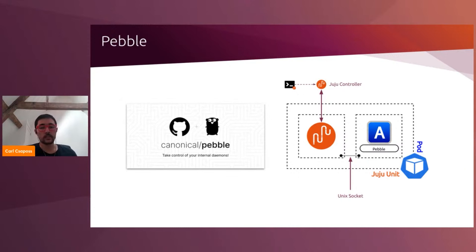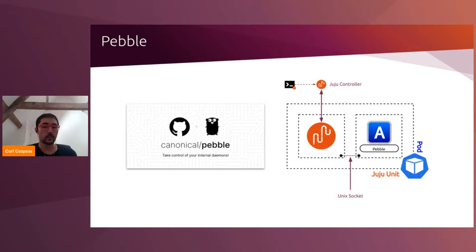So how does the charm container and the workload container communicate? Juju uses something called Pebble, which is a lightweight service manager. Juju injects that into the workload container — the applications container. So you can use the upstream workload container, and then Juju will inject Pebble, which allows the charm to manage the services in that container. The charm communicates with Pebble over a Unix socket.